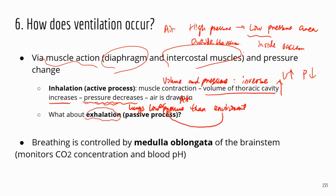Exhalation is the opposite. During exhalation, those muscles will relax, and that's going to shrink your thoracic cavity, so the volume goes down. Now the pressure will go up, and that's going to eventually exceed the pressure from the external environment. So the air is going to move from the lungs to the external environment — that's exhale, air going out.